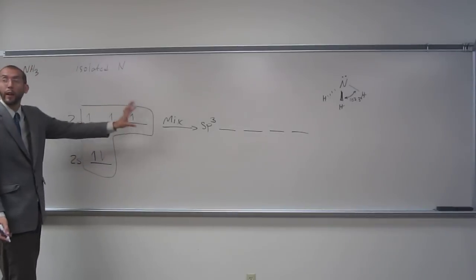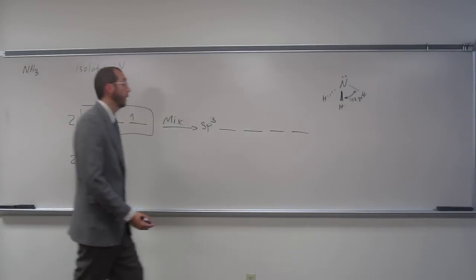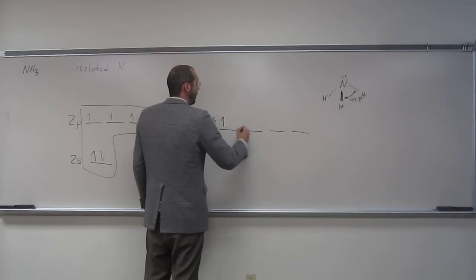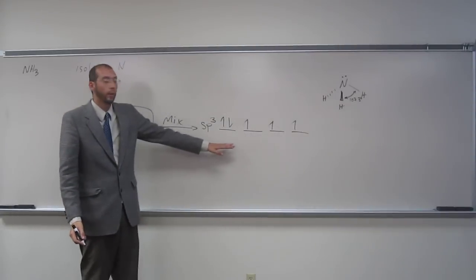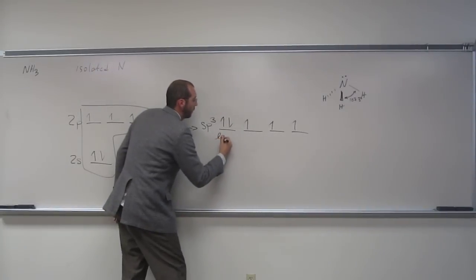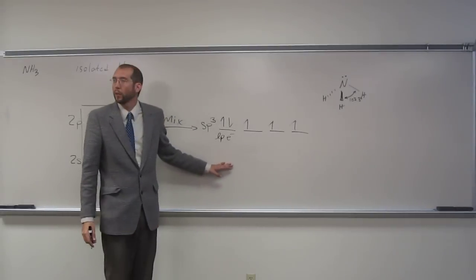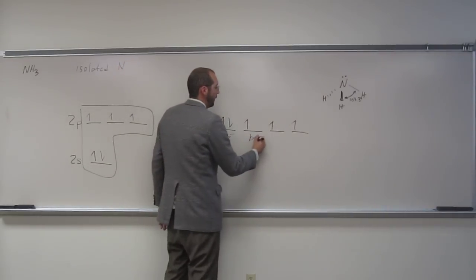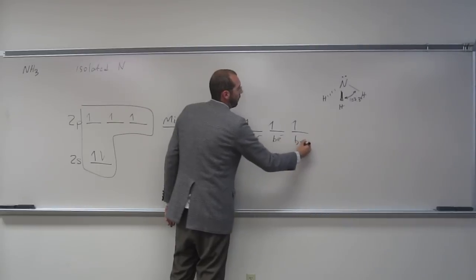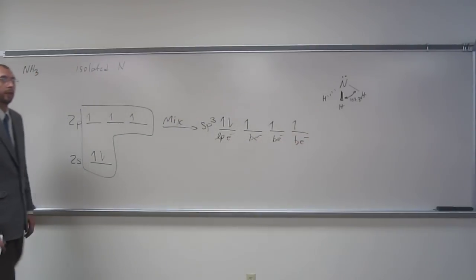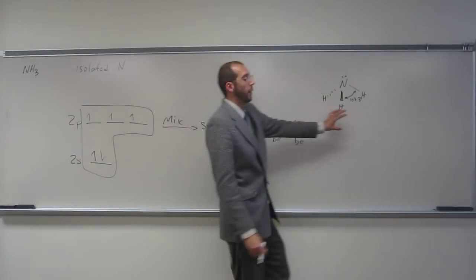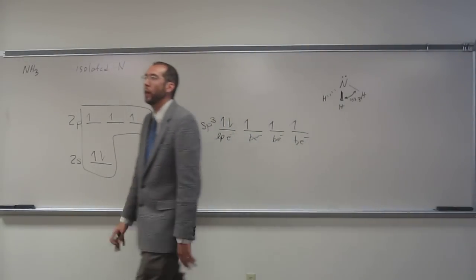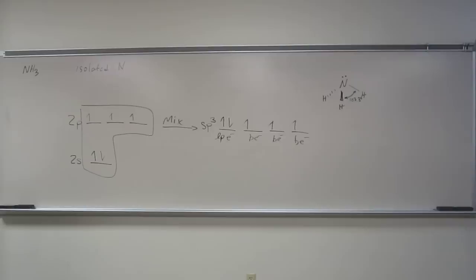So when we do that, we fill it up using our Hund's rule and Pauli exclusion. One, two, three, four, five. So if you look here, this is our lone pair electrons. Is everybody okay with that being the lone pair? And notice bonding electron, bonding electron, bonding electron. Again, we know this due to what VSEPR theory tells us about the bond angles and the equivalency of those electron groups.